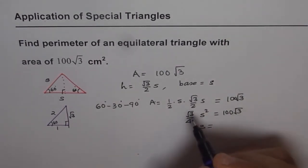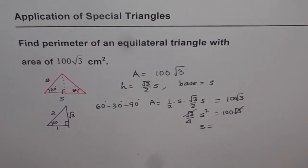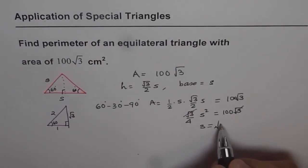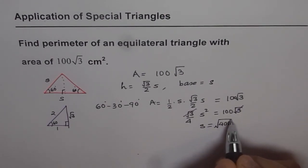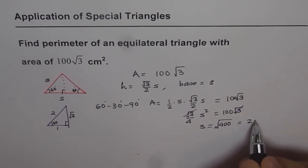We can cancel out √3 and √3. So we get s² = 400, which is equal to s = 20.